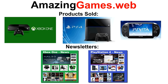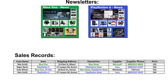Signing up for these newsletters is optional — it's not tied to any purchase. A member can sign up for either one, both, or none at will. These are some of their sales records. They currently keep track of customer name, the item purchased, the shipping address, what newsletter the person signed up for, the supplier of the item, the supplier's phone number, and the price of the purchase.